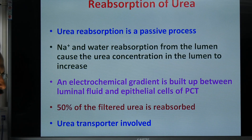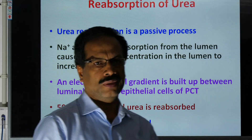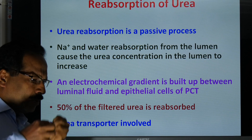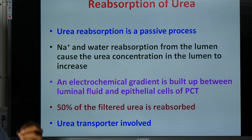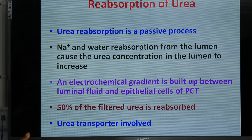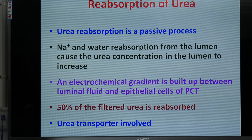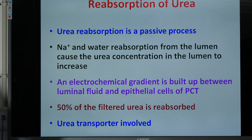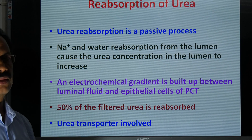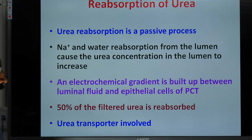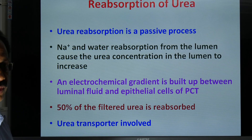Urea is a waste material and its reabsorption needs to be controlled, but reabsorption of a certain amount becomes inevitable. As the fluid passes through the tubule, concentration of urea becomes quite high, and part of it moves through transporters into the cell and then into the interstitial fluid. 50% of the filtered urea is reabsorbed because of the electrochemical gradient — more urea in the tubular fluid and less in the cell — causing movement through urea transporters.